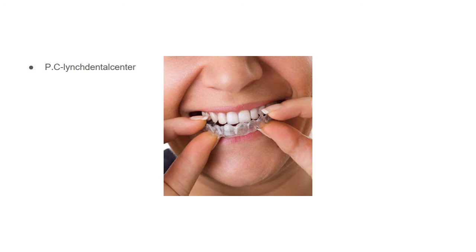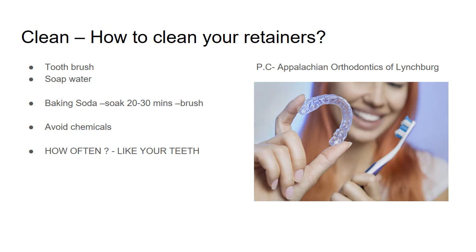For a clear retainer, the instructions remain the same. Position the back area of the clear retainer first, then the front area. Again, don't use one hand, don't start with the front teeth first — do it bilaterally with both hands, positioning the back region first.